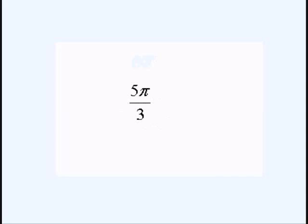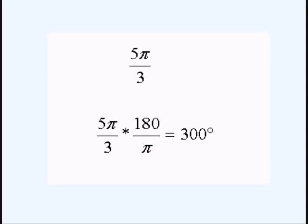Now, what if we have an angle measurement like 5 pi over 3? This one's actually in radians, and our big hint is it has pi in it. To convert it back into degrees, we multiply it by 180 over pi.